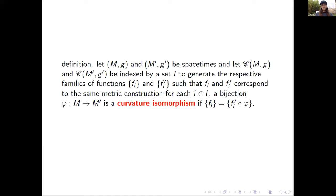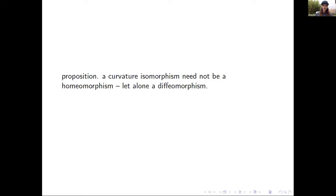Let (M, g) and (M', g') be spacetimes with collections C(M,g) and C(M',g') of invariant scalar curvature functions, indexed by a set I to generate respective families F_I and F'_I, where each F_I and F'_I correspond to the same metric construction. A bijection from one manifold to the other is a curvature isomorphism if for all I, pulling back F'_I gives F_I. One can show that a curvature isomorphism need not be a homeomorphism, let alone a diffeomorphism. This is analogous to the Malament result: at low levels in the causal hierarchy, a causal isomorphism isn't a homeomorphism, but at some higher level it is.